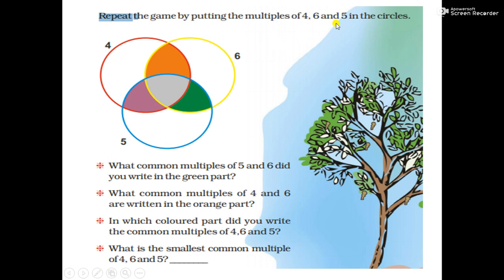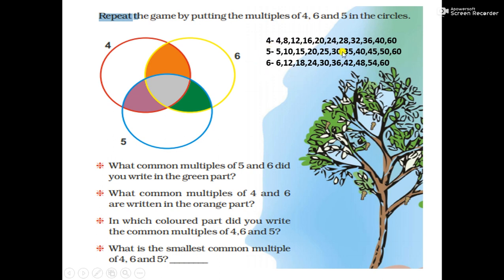Repeat the game by putting multiples of 4, 6, and 5 in the circles. We have to write multiples of 4 in the red circle, multiples of 6 in the yellow circle, and multiples of 5 in the blue circle. Multiples of 4: 4, 8, 12, 16, 20, 24, 28, 32, 36, 40, 60. All these are multiples of 4 because all these numbers can be divided by 4.